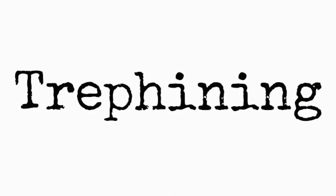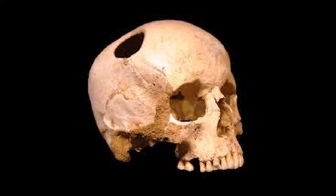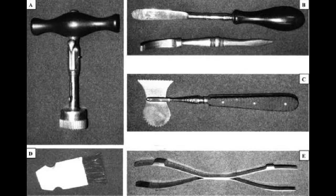Trefining was a procedure designed to relieve pressure from the brain in the case of a skull fracture or a brain hematoma. A hole would sometimes be made in the skull, or the wound could be used to access the skull if large enough. The brain would then be pushed away from the wound and fragments of bone or debris would be removed from the brain matter.